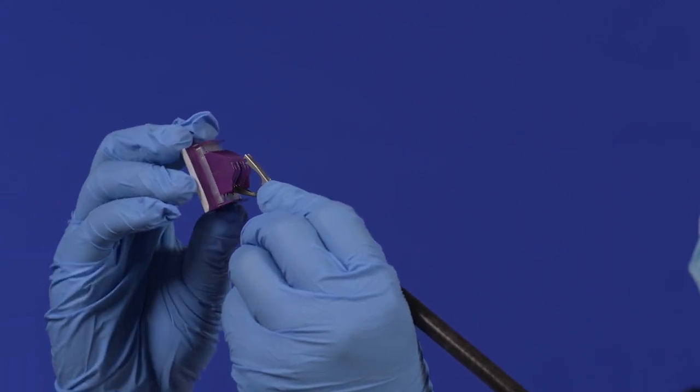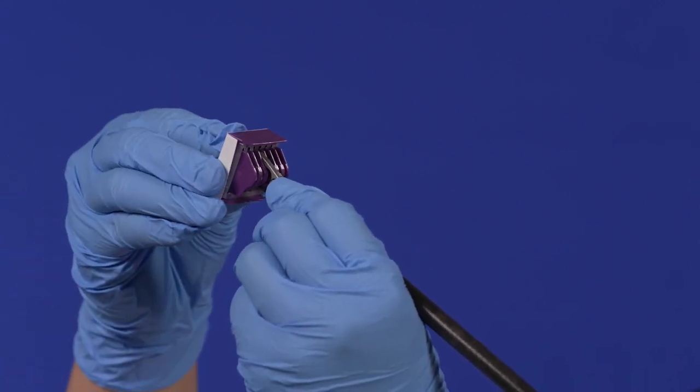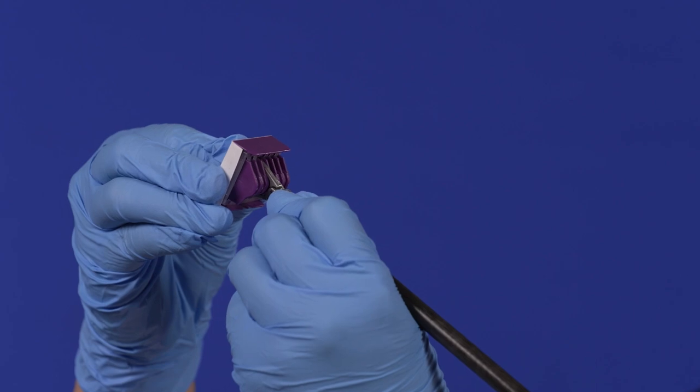Carefully insert the jaws of the applier into the cartridge slot, making sure the jaws are perpendicular to the base of the cartridge.